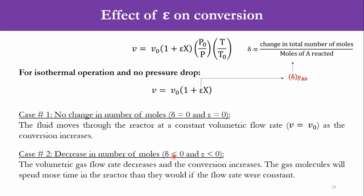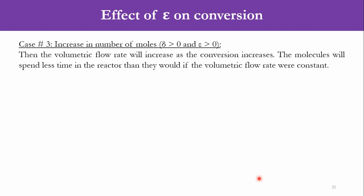Case 2: decrease in number of moles, δ < 0, so ε < 0 — the number of moles of products is less than the number of moles of reactants. For example, ammonia production: N₂ + 3H₂ → 2NH₃, which gives a negative δ. Accordingly, the volumetric gas flow rate decreases with increasing conversion, which means gas molecules spend more time in the reactor than they would if the flow rate were constant — so residence time increases.